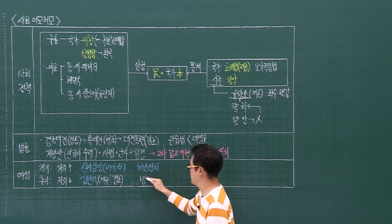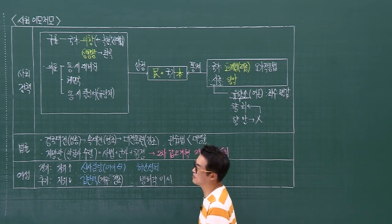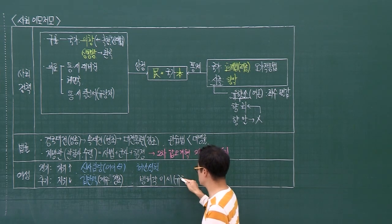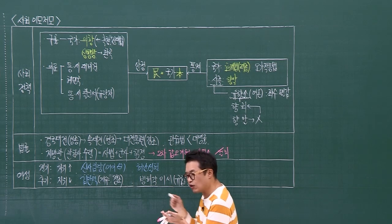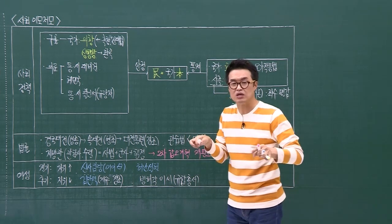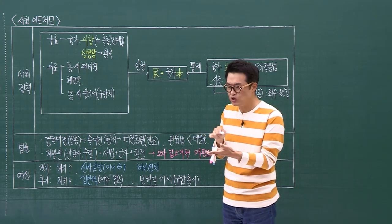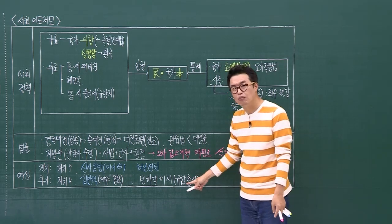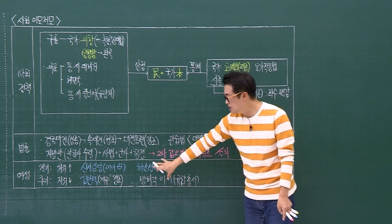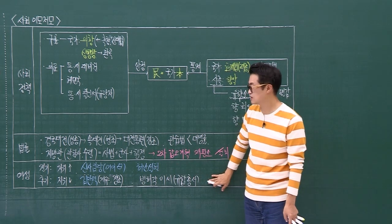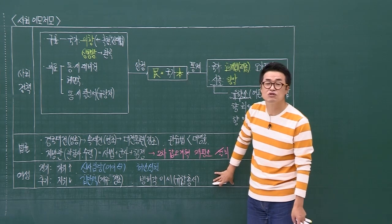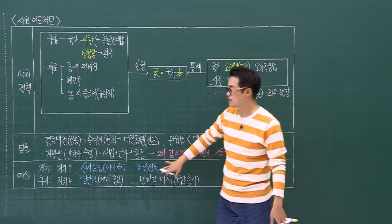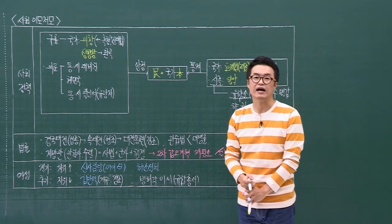빙허각 이씨라는 분이 쓴 책이 규합총서입니다. 규합은 안방을 의미해요. 조선 후기 여성들이 해야 될 것들, 요리하는 거, 아이 키우는 거 등 그런 노하우들을 모아 놓은 책이 규합총서예요. 이 시대의 산물이라고 볼 수 있는 것이죠. 지금 이런 조선 후기의 모습들이 서서히 변하고 있지만, 아직까지도 기울어진 운동장이 아닐까. 예전에 가정 내 여성의 지위를 좀 회복할 수 있지 않을까라는 생각이 듭니다.